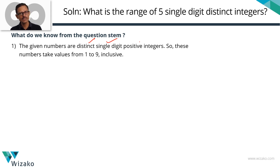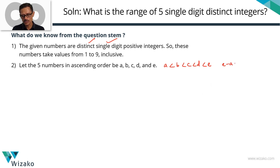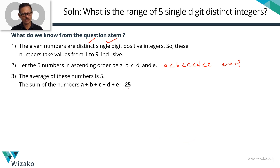Let's say these numbers are a, b, c, d, e in ascending order, so a < b < c < d < e. We need to find the value of e minus a. The average of these five numbers is 5, which means their sum is 5 times 5, equal to 25. So a + b + c + d + e = 25.